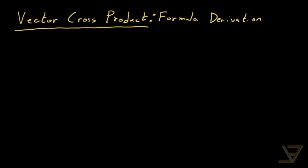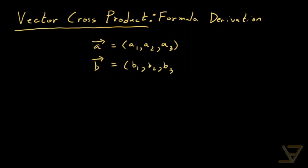Hi, everyone. Let's talk about the vector cross product formula. The scenario is like this: we've got a vector A in three dimensions, so its components are A1, A2, A3. And we have another vector B, so its components are B1, B2, B3. These are position vectors emanating from the origin, and let's say that they're linearly independent.